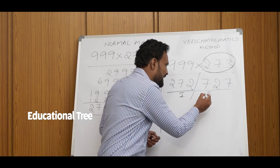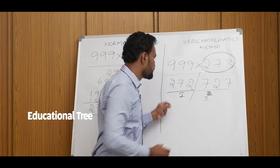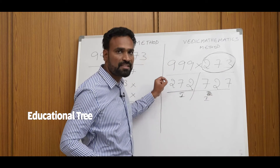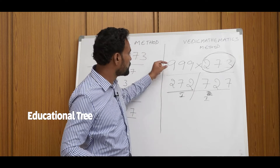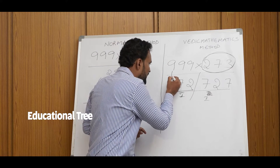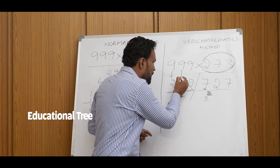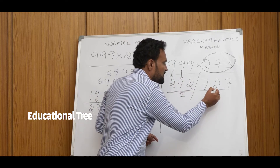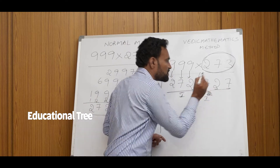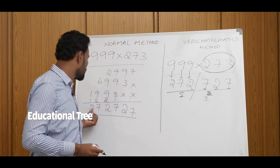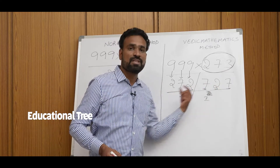For the second part: take each digit and subtract from 9. What is 9 minus 2? It is 7. Next, 9 minus 7 is 2. Next, 9 minus 2 is 7. That is the final answer. Let's check the same answer.